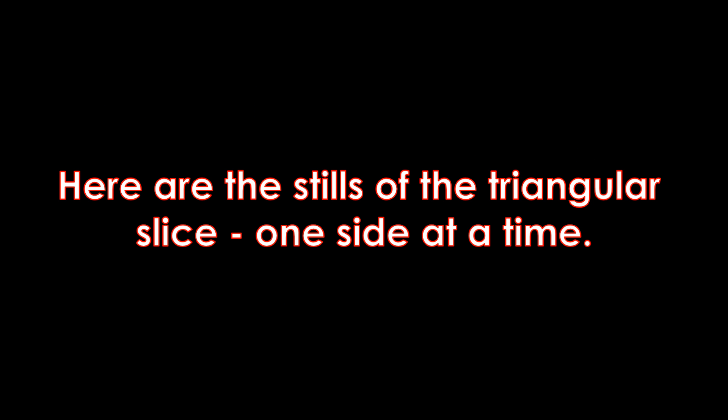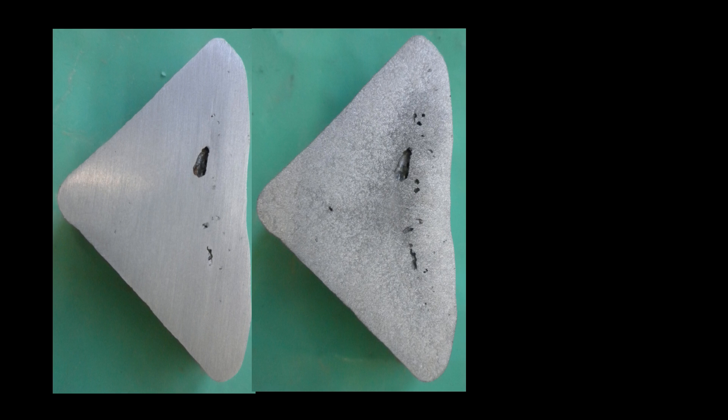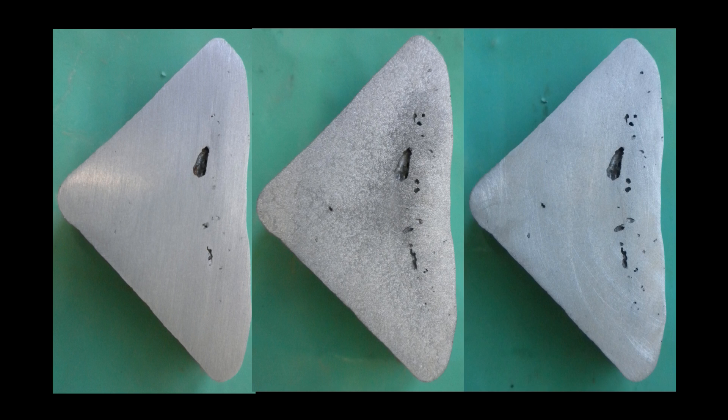Here are some stills of the triangular slice, one side at a time. First we have the sample as sanded, you can see most of the coarse porosity but not really all that much of the fine stuff. Now we have the sample etched and the porosity is beginning to be revealed a bit more but it's partially covered by the etch.